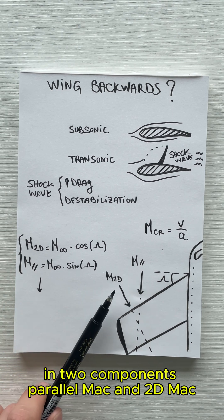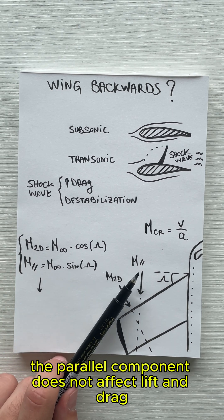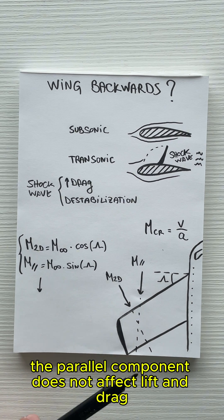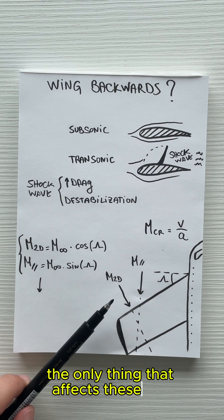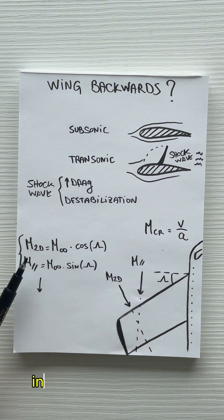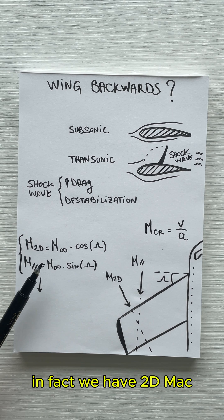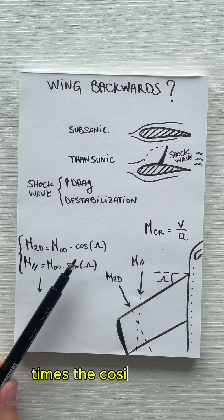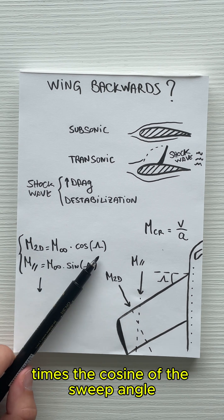Parallel Mach and 2D Mach. The parallel component does not affect lift and drag. Remember that. The only thing that affects these two forces is the 2D Mach. In fact, we have 2D Mach, which is infinity Mach times the cosine of the sweep angle.